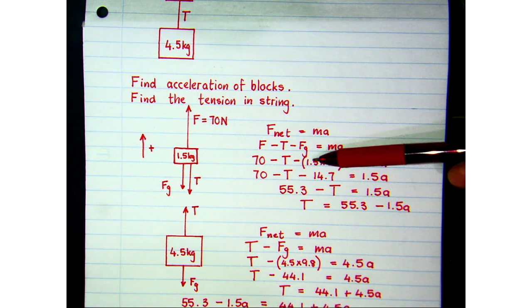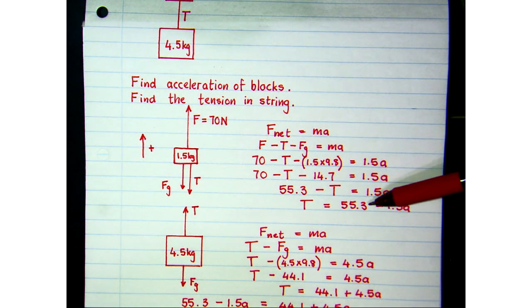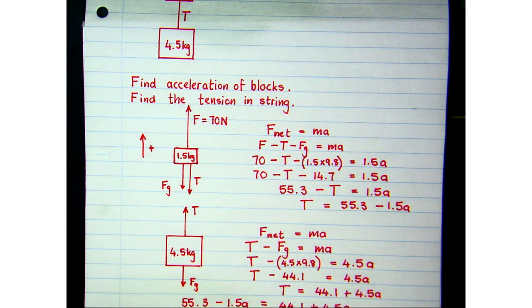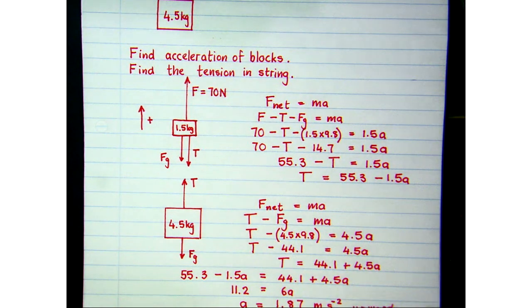So if we do the maths and solve for T, we find that we get this expression for the tension force if we just move things around correctly. So again we've got an expression in two unknowns and it's impossible to solve that unless we have a second equation in those two unknowns. So we do the same for the 4.5 kg block.